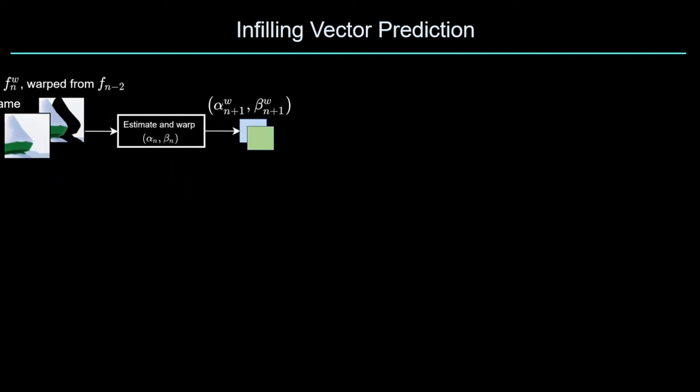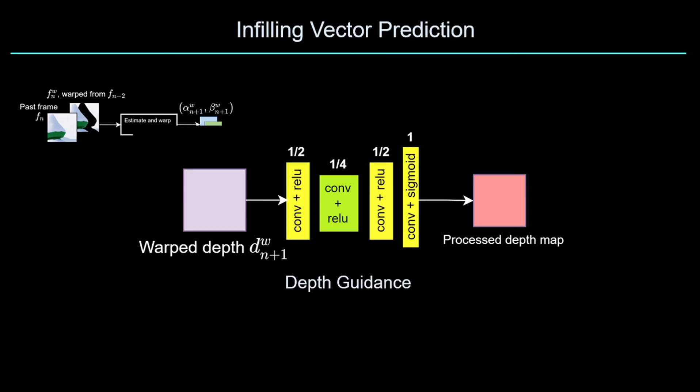For infilling disocclusion, reading off from the background is desired. We therefore use the warp depth of frame n plus one as input to differentiate between foreground and the valid background locations.